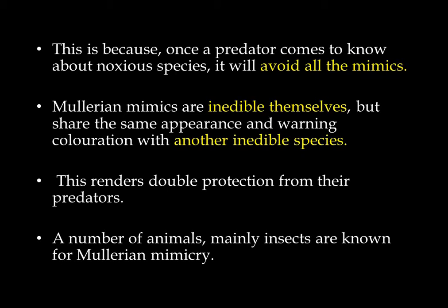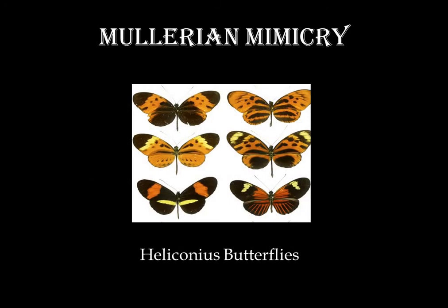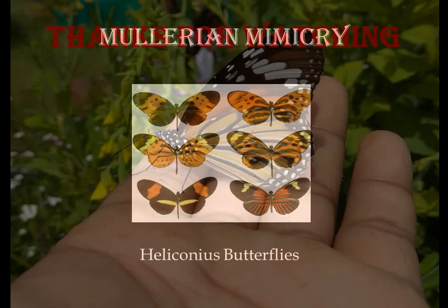This renders double protection from their predators. A number of animals, mainly insects, are known for Mullerian mimicry. As you know, insects — and butterflies — belong to the class Insecta of the phylum Arthropoda. Here, the example of Mullerian mimicry is shown in this diagram of the Heliconius butterflies. These six species of Heliconius are all distasteful to bird predators. A bird that consumes any member of these six species is likely to avoid all species in the future.